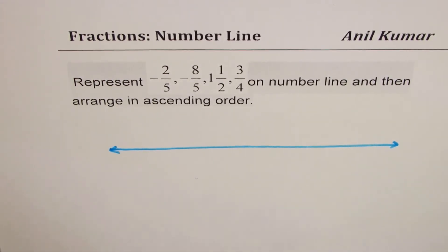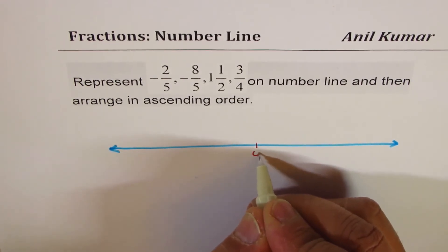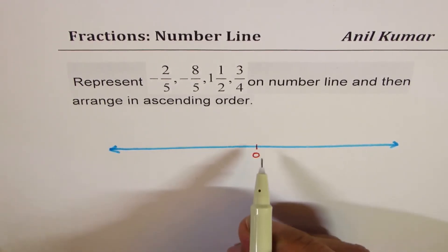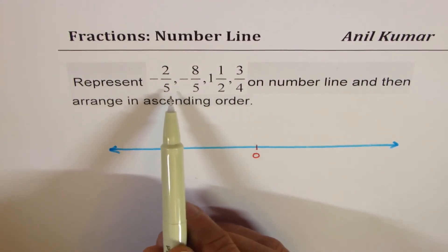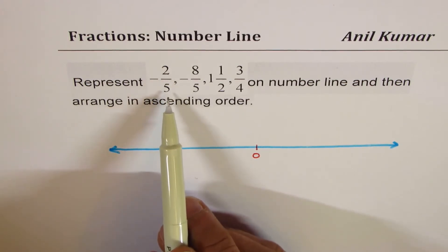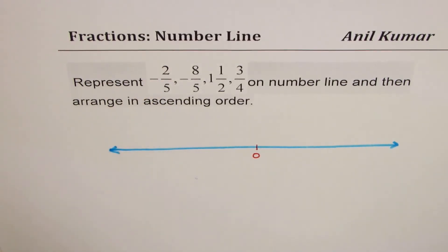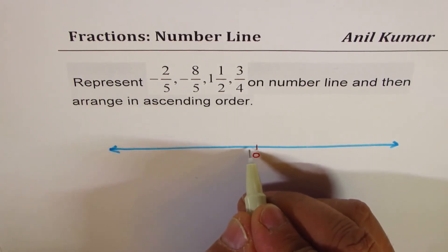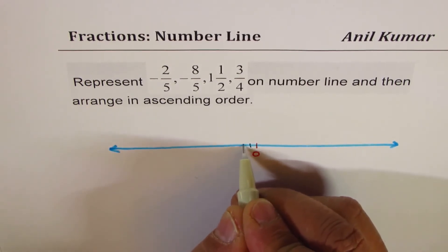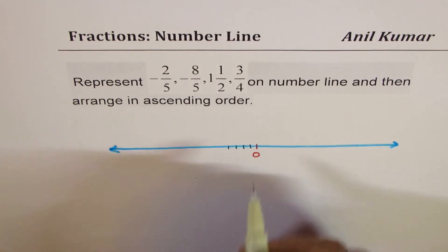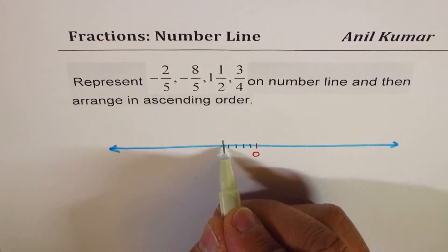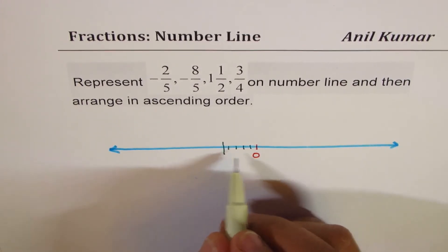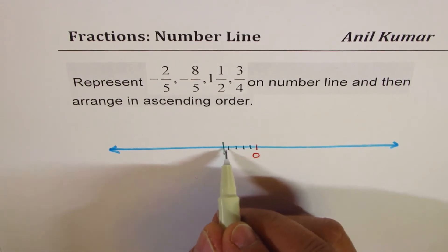Let's begin by placing 0 somewhere in the center, then mark 1. Since on the left side we have -2/5, we want small divisions of 1/5. So I will make 5 divisions: 1, 2, 3, 4 — and this is the 5th one. These are 5 divisions of 1 unit.